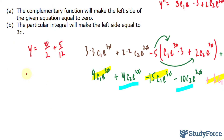We have y prime: x over 2 becomes 1 over 2, and 5 over 12 becomes 0. So y prime equals 1/2. Then y double prime: taking the derivative of 1/2 gives us 0.